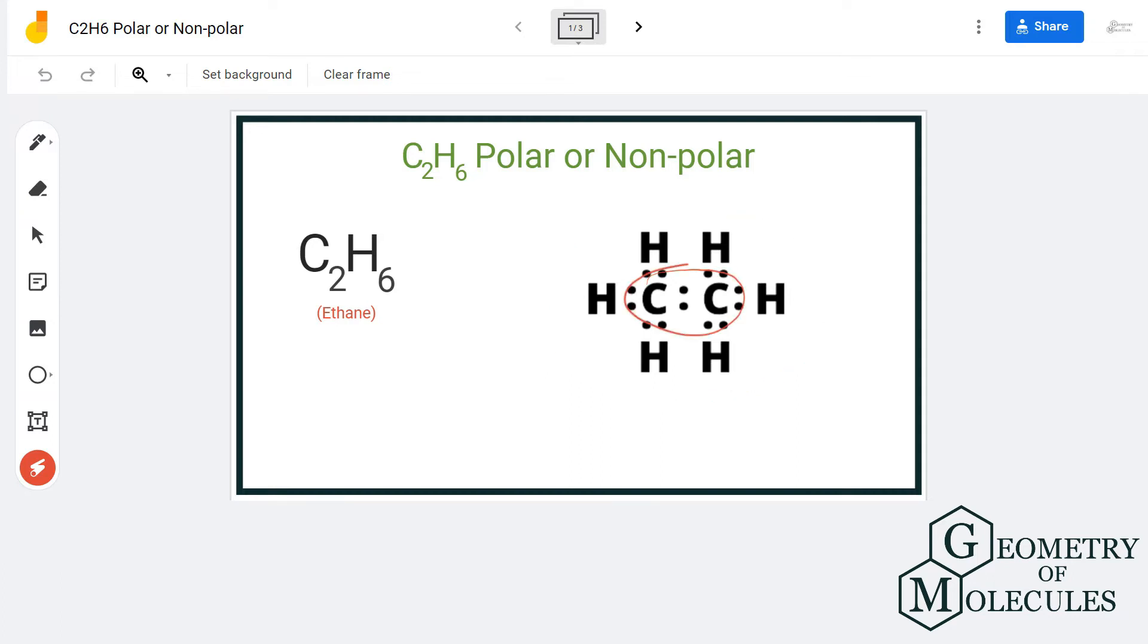By looking at the Lewis structure, we can say that the distribution of hydrogen atoms as well as electrons is quite symmetric. So there are chances that this molecule is a non-polar molecule, but to further confirm it we will look at its shape.